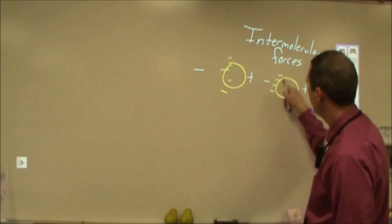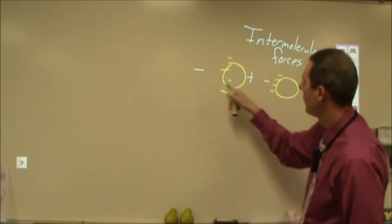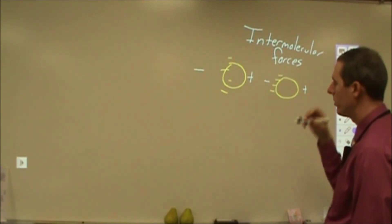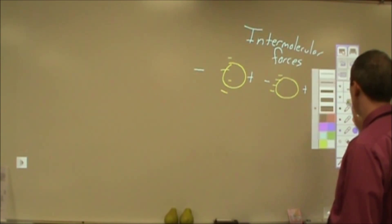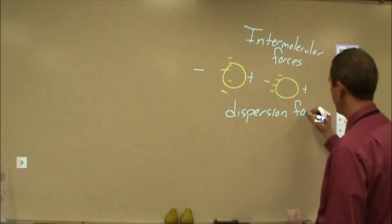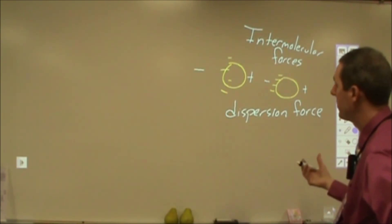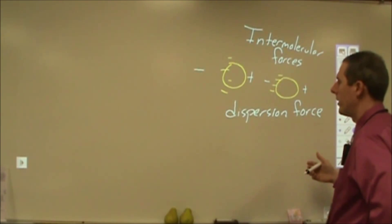The negative end of this being close to the positive end means I get a stronger attractive force than repulsion between the other two ends. When this happens — when it's temporary like this — when I have two neutral molecules that have no reason to stick together other than this temporary momentary dipole — that is called the dispersion force or London dispersion force. It is the weakest of intermolecular forces, and it basically means anything will stick to anything on some level due to this temporary dipole action.